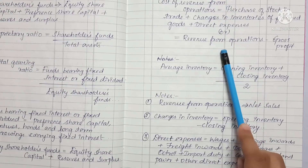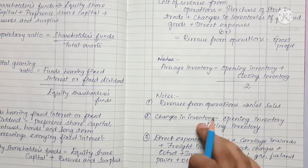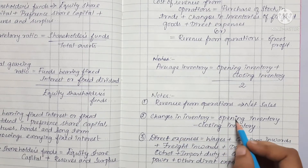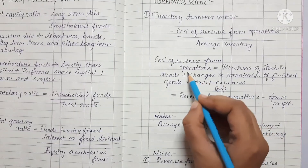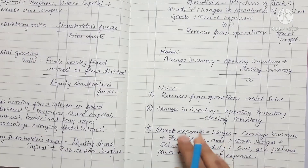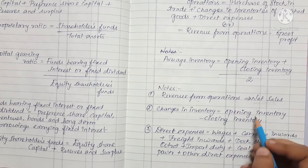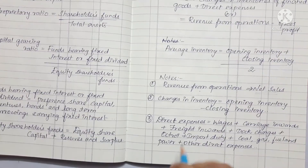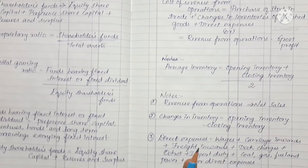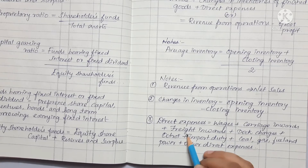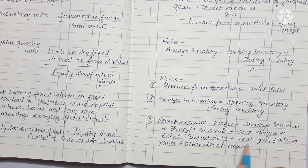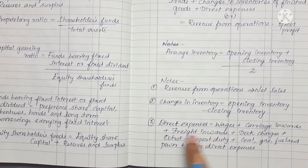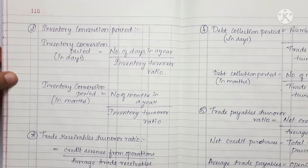Revenue from Operations means Net Sales. Change in Inventory is the difference between Opening Inventory and Closing Inventory — Opening Stock minus Closing Stock. Direct Expenses include Wages, Carriage Inward, Freight Inward, Dock Charges, Octroi Duty, Import Duty, Coal, Gas, Fuel, Power, and other direct expenses. These are all the components needed to establish Direct Expenses for the Inventory Turnover Ratio.